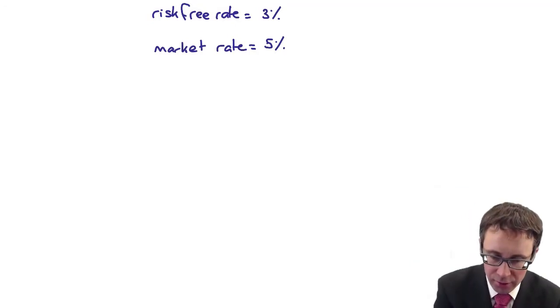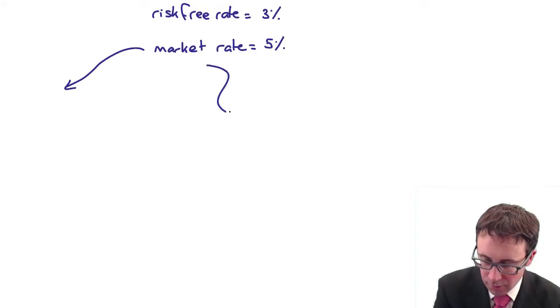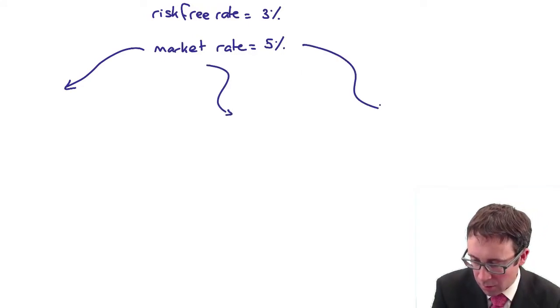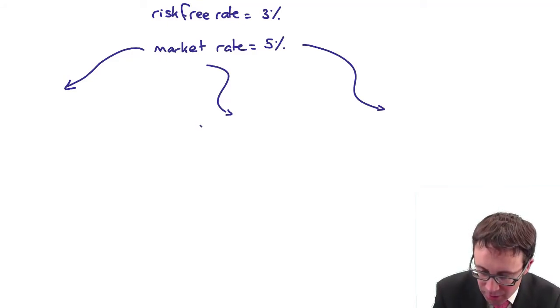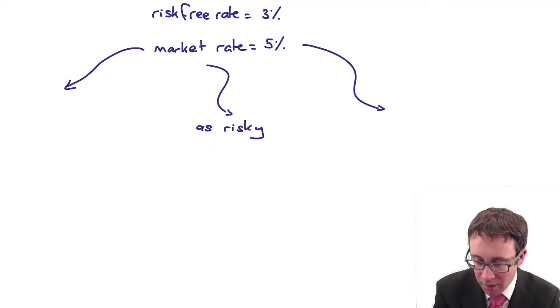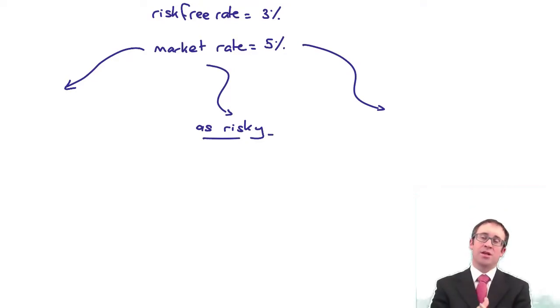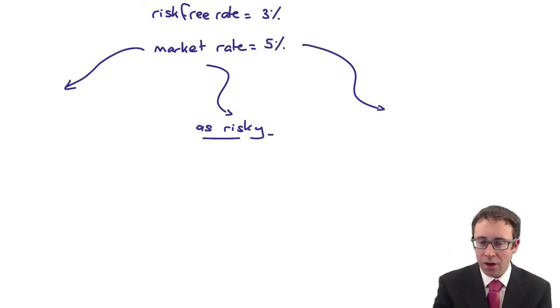So what have we got? We're going to look at three separate scenarios that look at the level of risk. Let's just say that the investment that you have or are looking to buy is as risky as the market. There is the same level of risk in your investment as there is in the market, the average market returns.